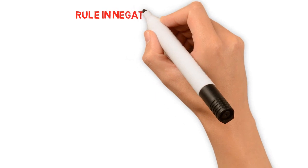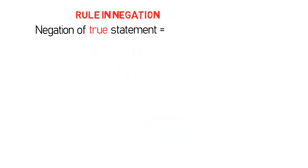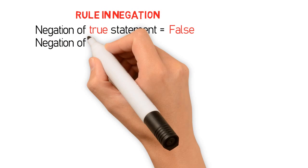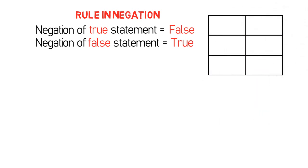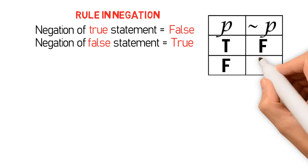So the rule in negation is as follows: The negation of a TRUE statement is FALSE, while the negation of a FALSE statement is TRUE. In other words, if a particular statement is TRUE, it becomes FALSE when negated; and if a particular statement is FALSE, it becomes TRUE when negated. Let me illustrate this through a truth table. If P is TRUE, then NOT P is FALSE. And if P is FALSE, then NOT P is TRUE.